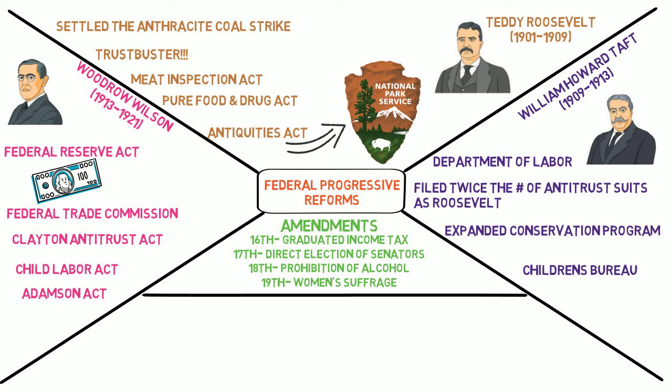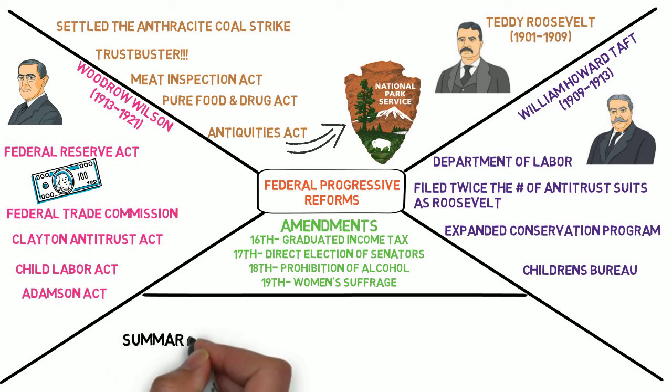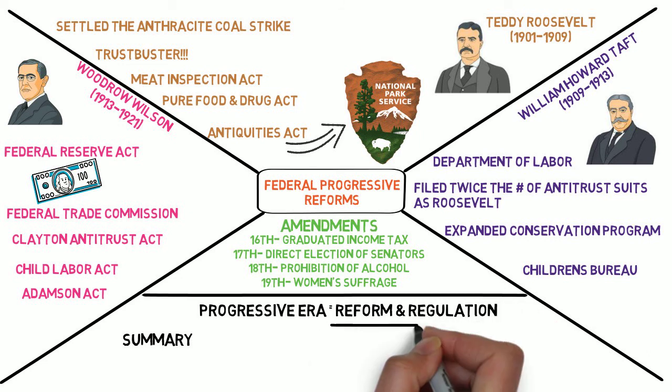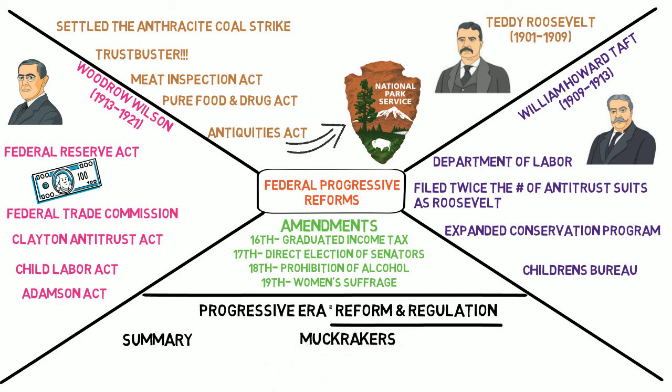In summary, the entire progressive era can be captured in two words: reform and regulation. Progressive reformers targeted the social, political, and economic inequalities made apparent during the industrial and corporate age. Muckraking journalists informed the public of unsanitary conditions, poverty, and government corruption. The public outcry led to a number of regulations covering a wide array of issues.